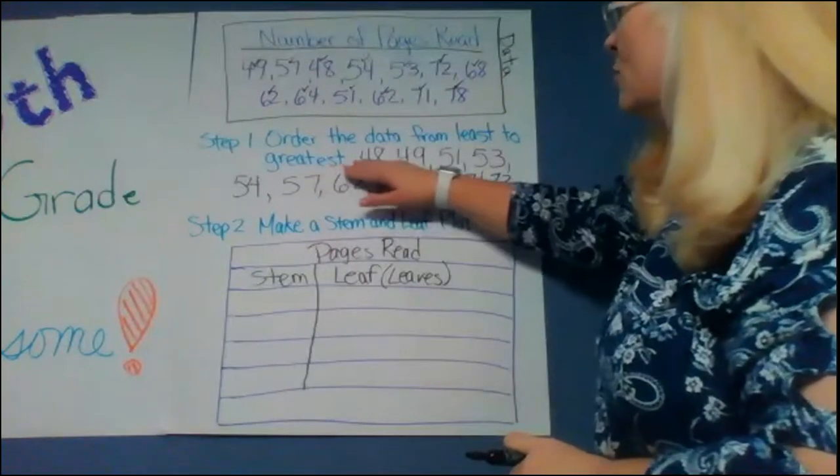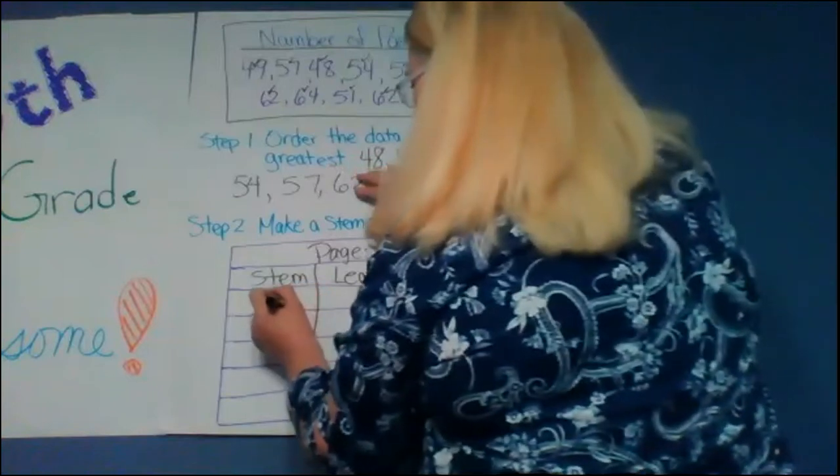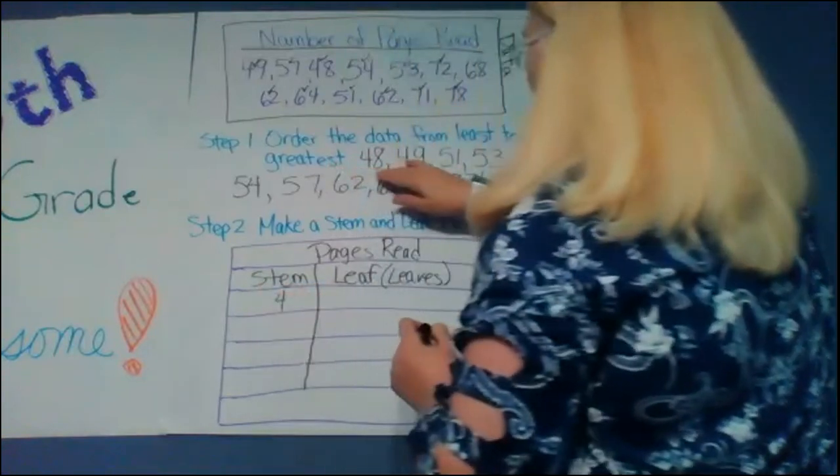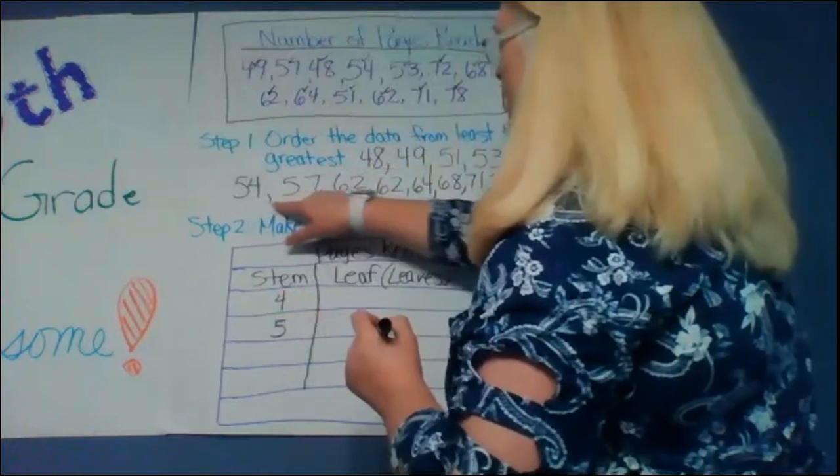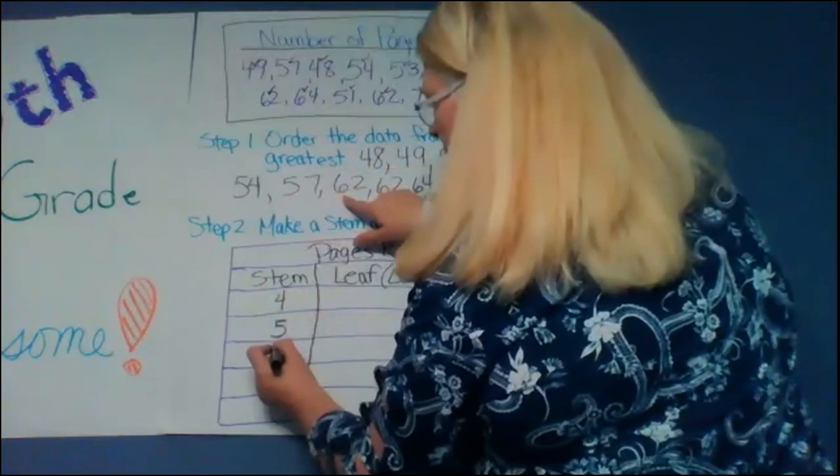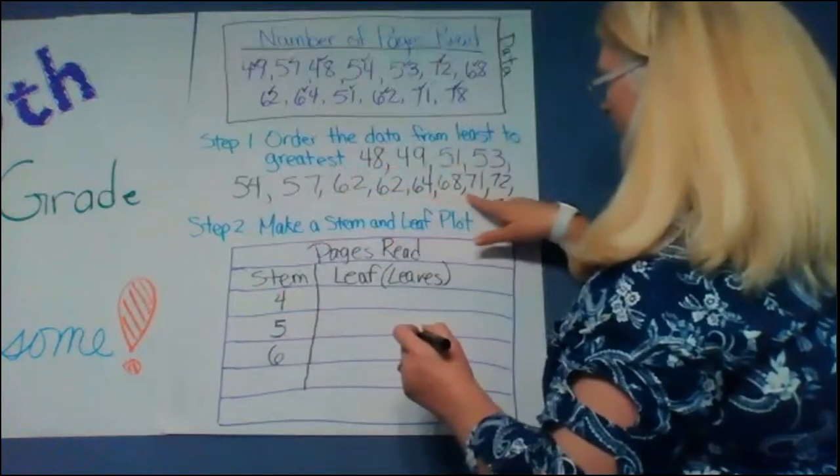And so I'm looking here at my different stems that I would have and I start with my lowest so I definitely have to have a four here. And then five, six, and seven.